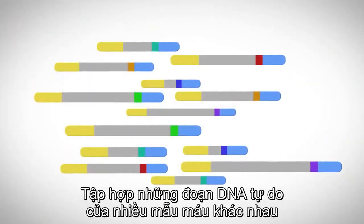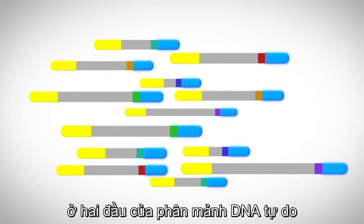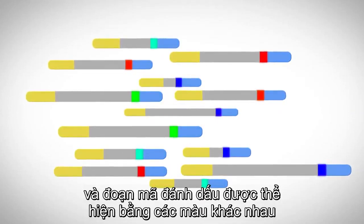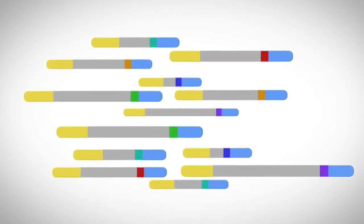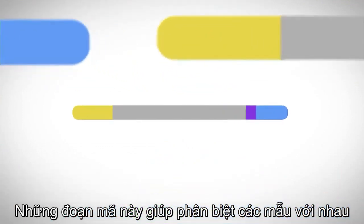Libraries composed of cell-free DNA from multiple patients are labeled with universal sequencing adapters, shown in blue and yellow at the end of each fragment, and sample-specific indexes or barcodes, shown in several colors, just inside the adapters. These barcodes distinguish the reads from each sample.